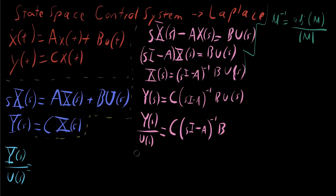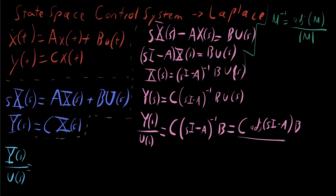Applying that substitution, we get Y(s)/U(s) = C · adj(sI − A) · B / det(sI − A). Now look at the denominator: det(sI − A). If you recall the discussion about fixed-point stability, or think back to linear algebra and eigenvalues — if we substitute λ for s, then det(λI − A) = 0 is exactly the equation by which you find the eigenvalues of A. That is not an accident; it was done very intentionally.